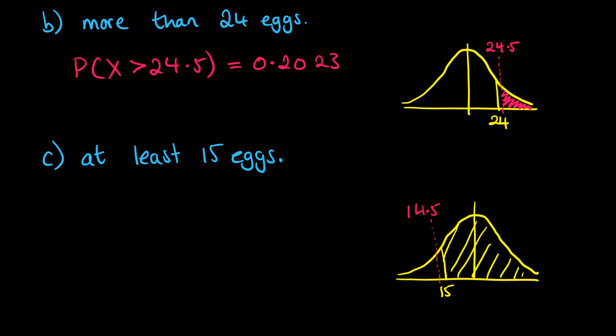So that when we go more than 14.5, we're going to get that little slither there plus all the things that are 15 and more. So we're going for probability that x is greater than 14.5 and pop that into the calculator and we get 0.9938.